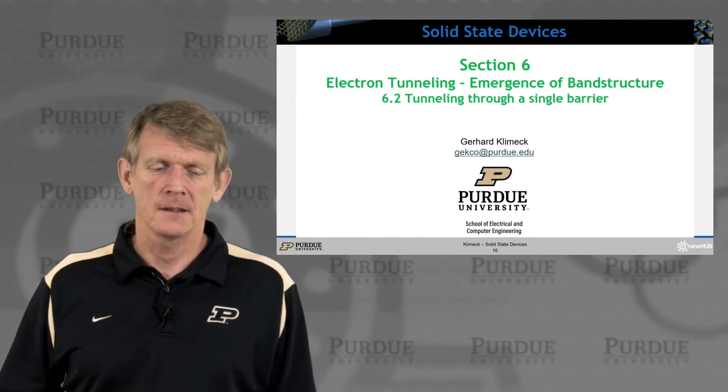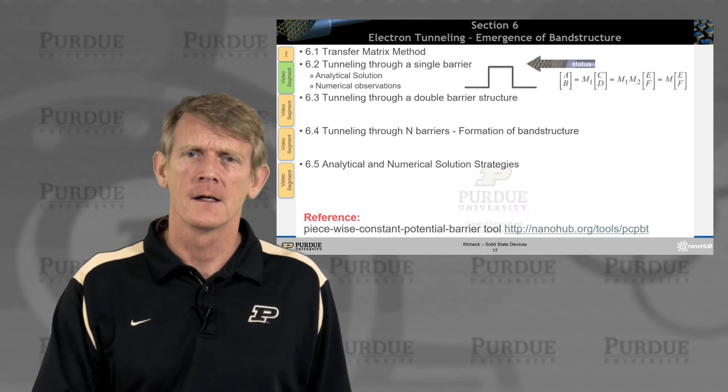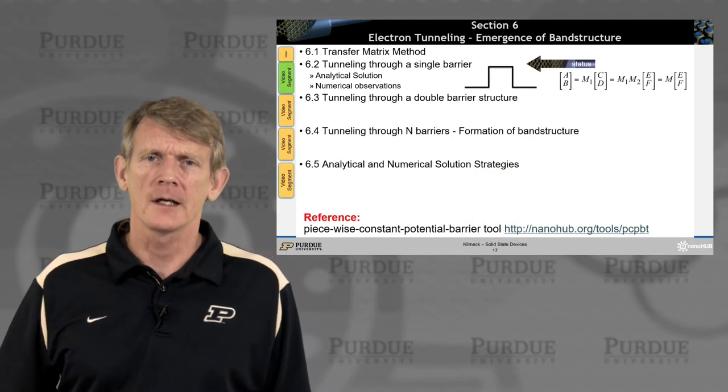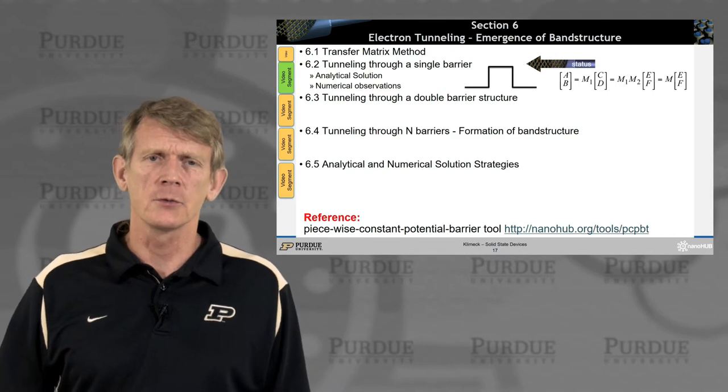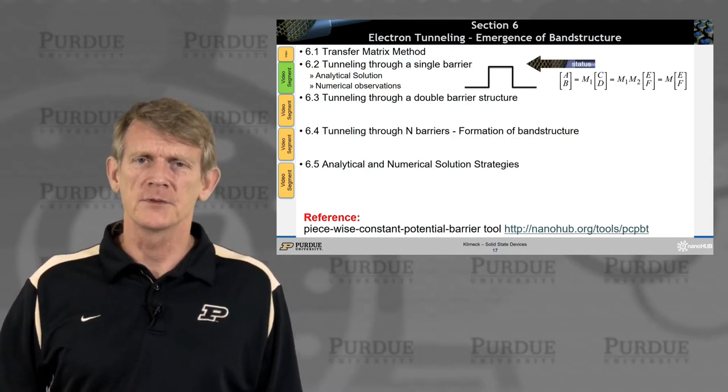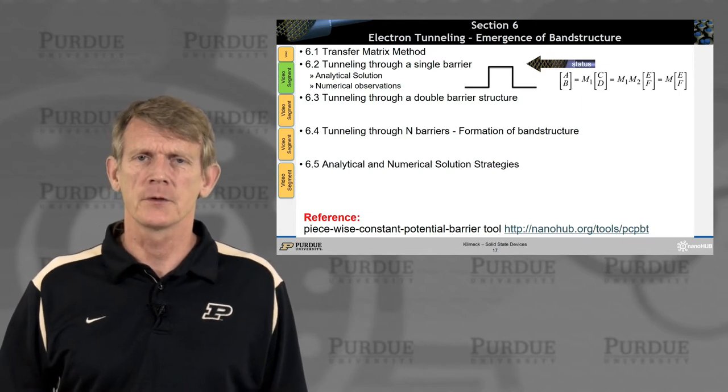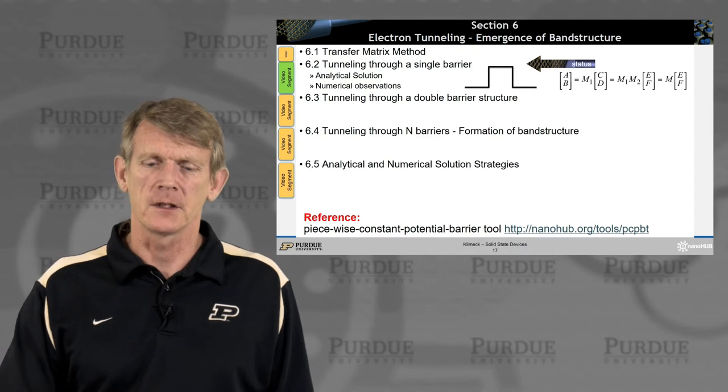So here we are. I'd like to talk about tunneling through a single barrier. In the outline we'll be looking at analytical solutions to this and then have some numerical observations from the solutions, and then we'll expand to multiple barriers down the line.